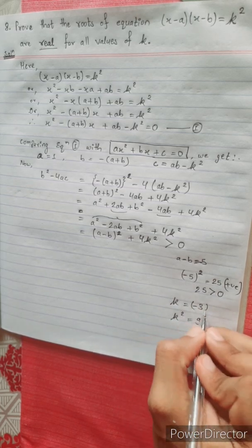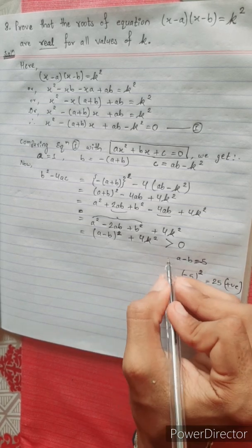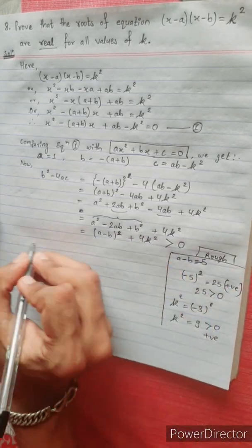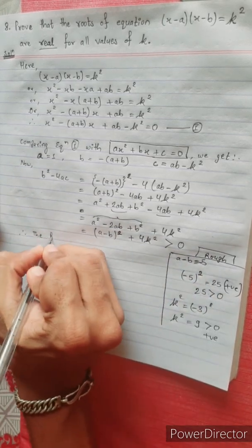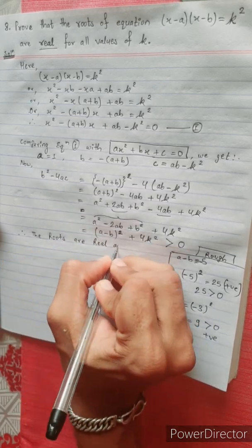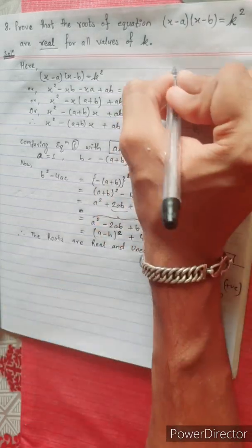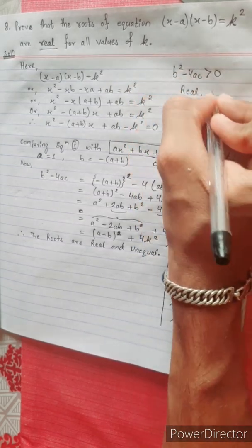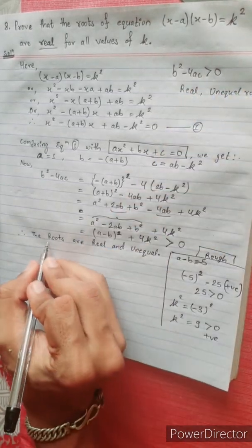The result is positive. This is a positive number, greater than 0. Therefore, the roots are real and unequal. This is the property of b squared minus 4ac greater than 0 — real and unequal roots. Therefore, the roots are real for all values of k.